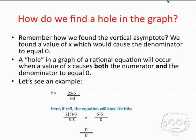Remember how we found the vertical asymptote? We found a value of x which would cause the denominator of our equation to equal zero. A hole in the graph of a rational equation will occur when a value of x causes both the numerator and the denominator to equal zero.